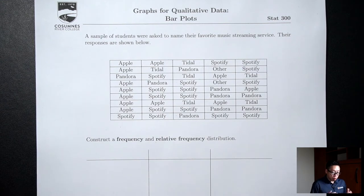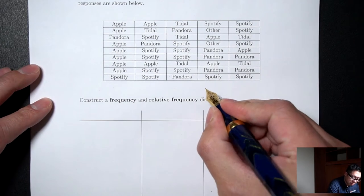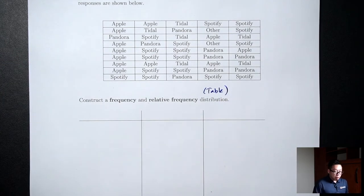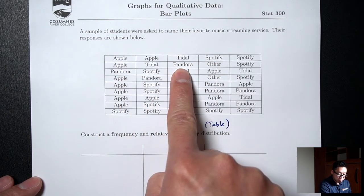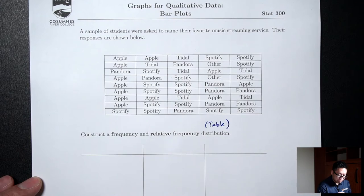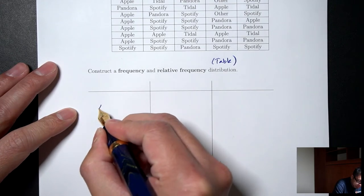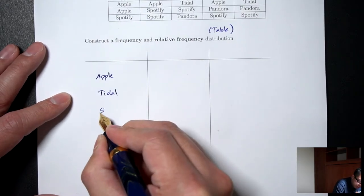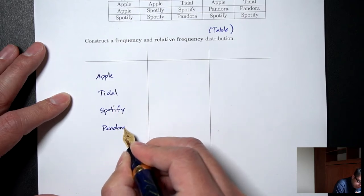The first thing I'm going to do to organize my data is make what is called a distribution. A distribution is just a fancy way of saying make a table. The first thing I need to do is list out all the possible data values in my data set. So if I look at my data set, I see Apple, Tidal, Spotify, Pandora, and Other. So my possible data values are Apple, Tidal, Spotify, Pandora, and Other.